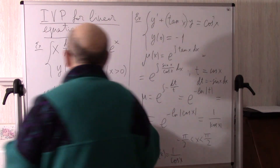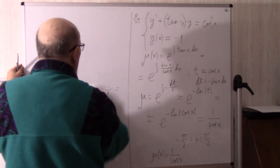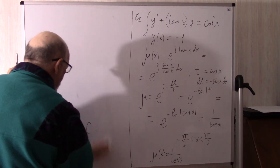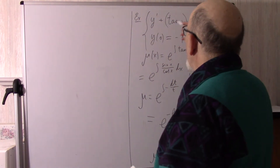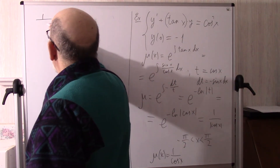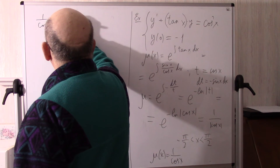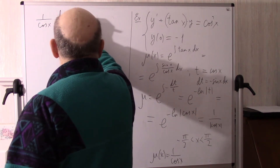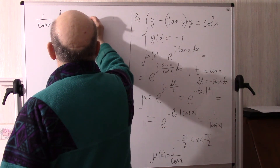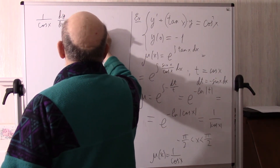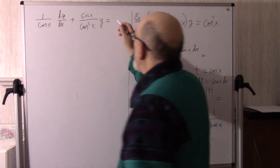So instead of |cos(x)| we write mu(x) equals 1 over cos(x). Multiplying by this factor, the equation becomes (1/cos(x)) dy/dx plus tangent(x)/cos(x) · y equals cos²(x)/cos(x), which is cos(x).